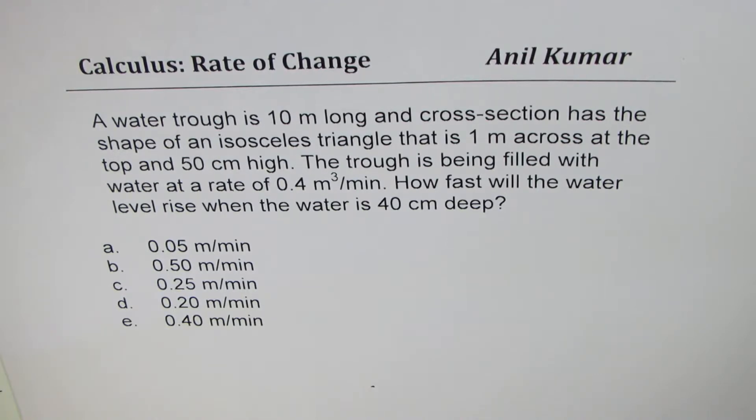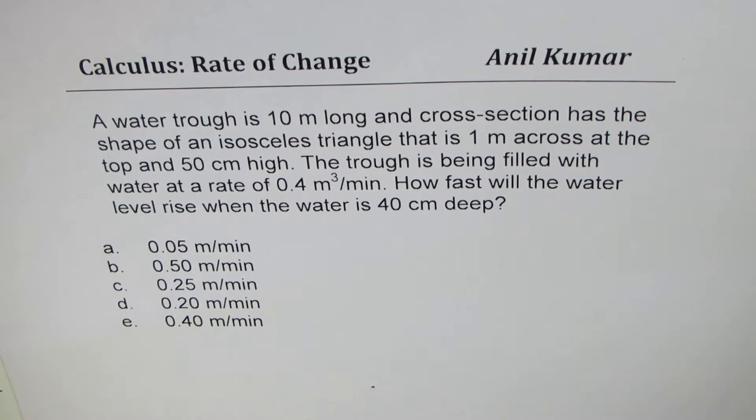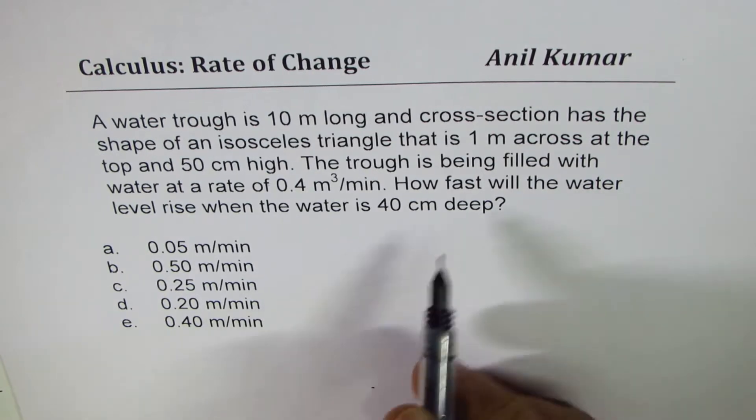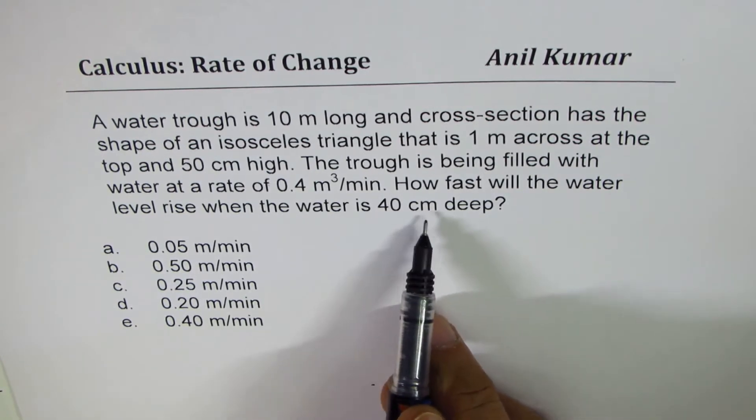a water trough is 10 meters long and cross section has the shape of an isosceles triangle that is 1 meter across at the top and 50 centimeter high. The trough is being filled with water at the rate of 0.4 meter cube per minute. How fast will the water level rise when water is 40 centimeter deep?